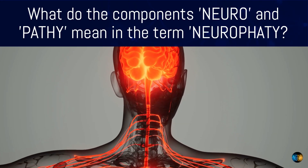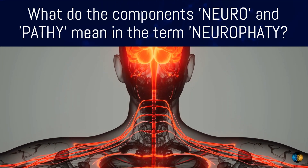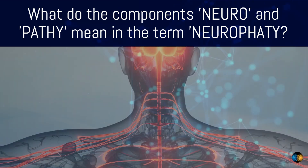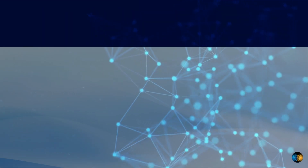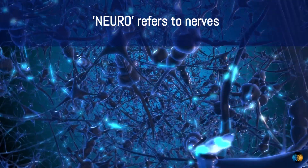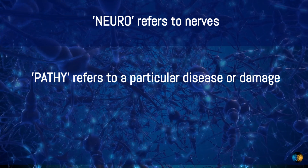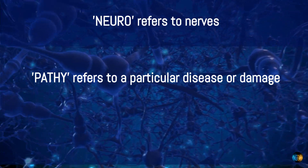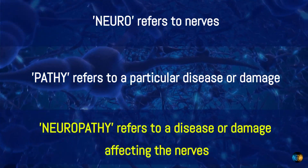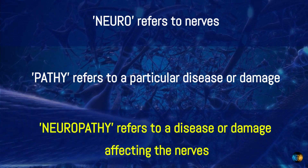What do the components neuro and pathy mean in the term neuropathy? Neuro refers to nerves, pathy refers to a particular disease or damage, so neuropathy refers to a disease or damage affecting the nerves.